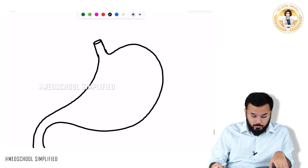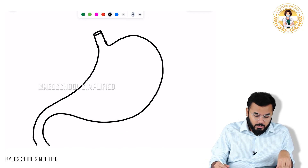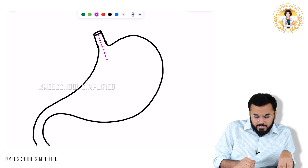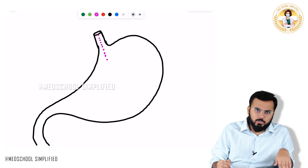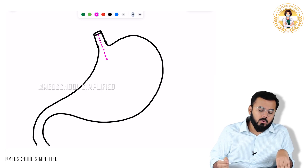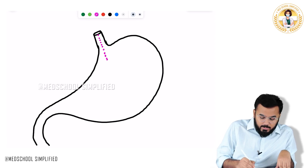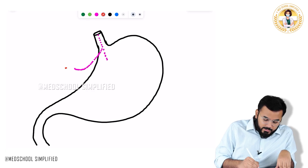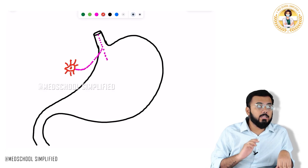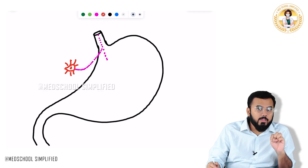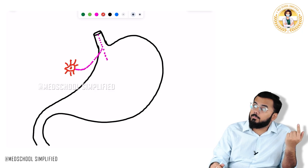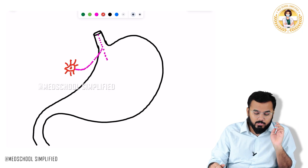Now, coming to the branches on the posterior side — I will draw these with dotted lines. Anteriorly we have the anterior vagal trunk; posteriorly we have the posterior vagal trunk. The posterior vagal trunk gives out a branch that enters into the same celiac ganglion. This is again a celiac branch, but given on the posterior side.